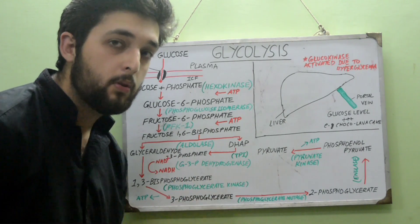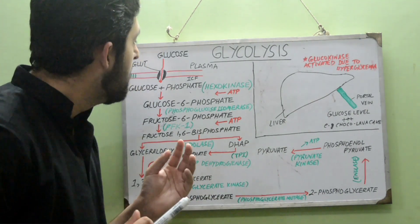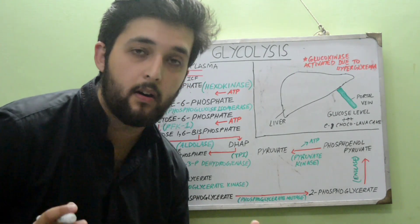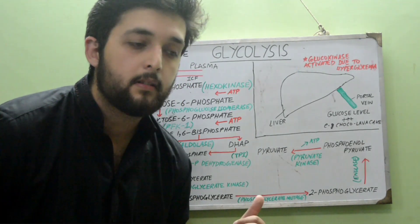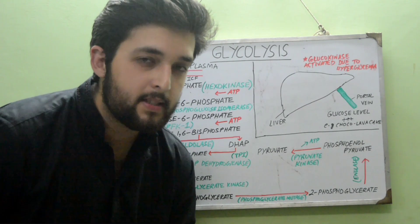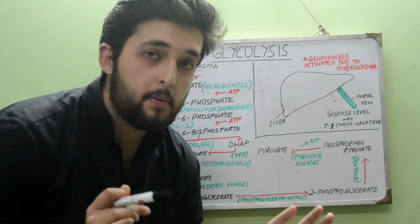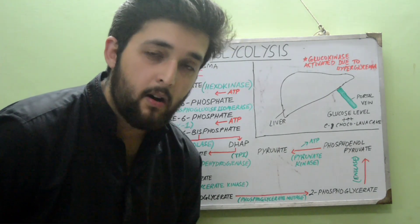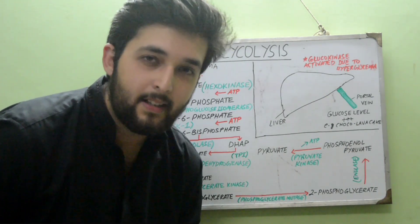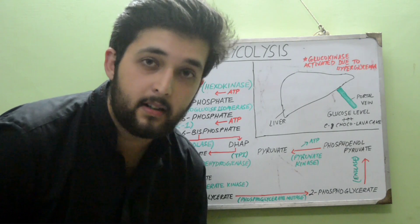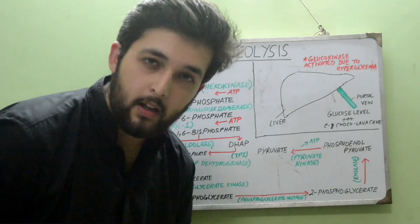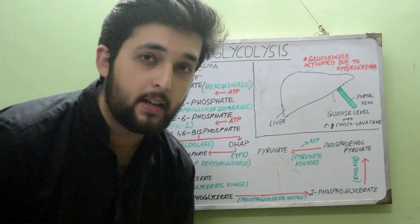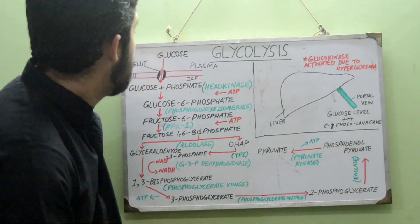GLUT stands for glucose transporter. There are 14 types of GLUT proteins. The four most important are: GLUT1, present in blood and the blood-brain barrier; GLUT2, in the kidneys, liver, and pancreatic beta cells; GLUT3, in neurons; and GLUT4, in myocytes and adipocytes.